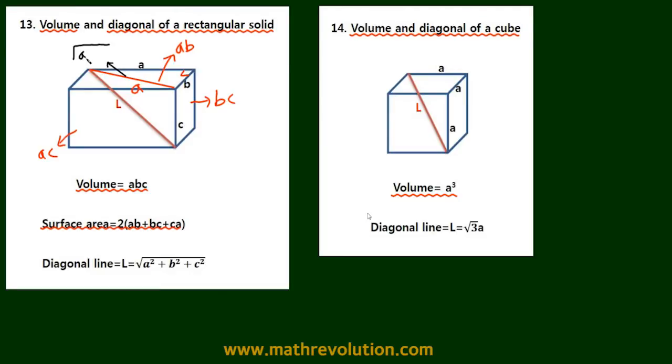Now we can use this line to get the diagonal L because once again the line that we just created and line c creates an angle of 90 degrees, so again we can use the Pythagoras theorem to get the length of L.